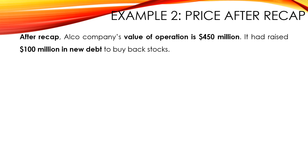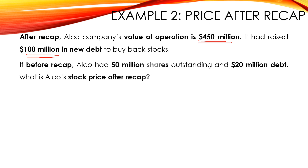Let's now move to the second example, which is about the stock price after recap. After recap, Alko Company's value of operations is 450 million dollars. It has raised 100 million dollars in new debt to buy back stocks. Before recap, Alko had 50 million shares outstanding and 20 million in debt. What is Alko's stock price after recap? So we need to calculate P post.